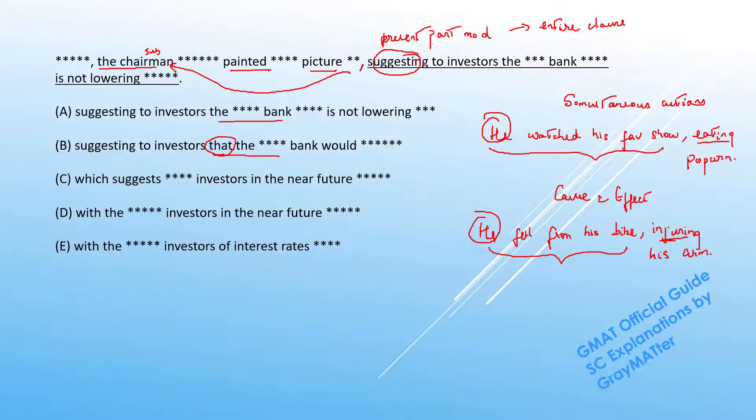Look at this construction: are we supposed to say the chairman suggested the bank or he suggested that the bank would do something? If I simply say "suggested" it will be similar to saying "he suggested a vacation." What did he suggest? He suggested a vacation. So when I simply use "suggest" I'll just use a noun construct.